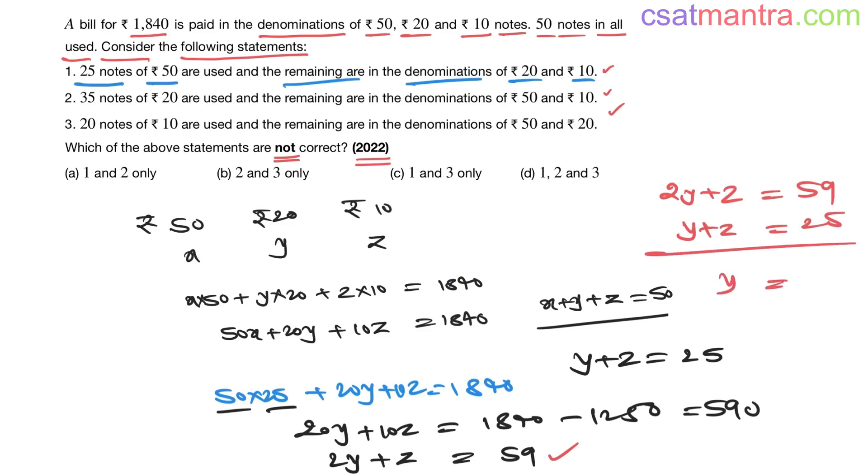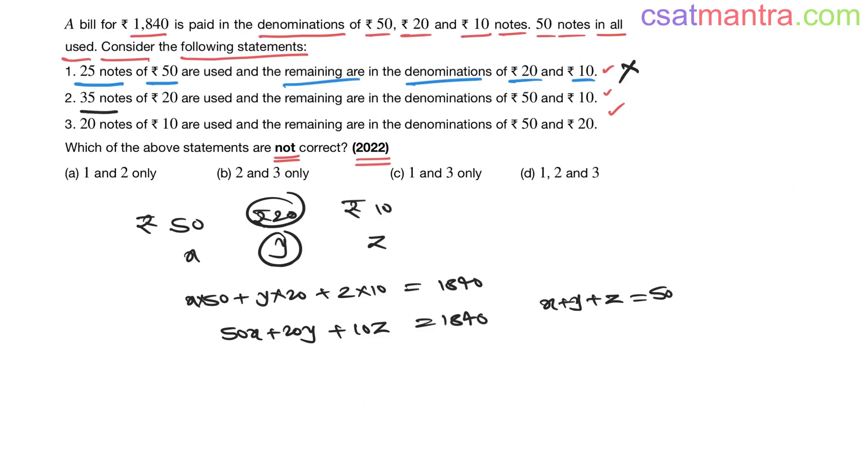See, 25 notes are already used. Now you're getting 34 notes of ₹20 as 34. This is highly impossible. In total we have 50 only, but the total is crossing 50. 25 plus 34 is crossing 50, so this is incorrect.